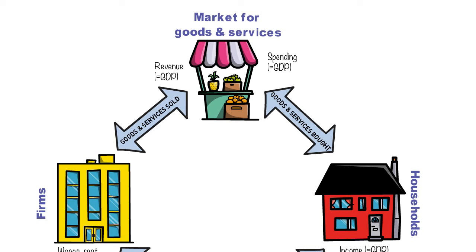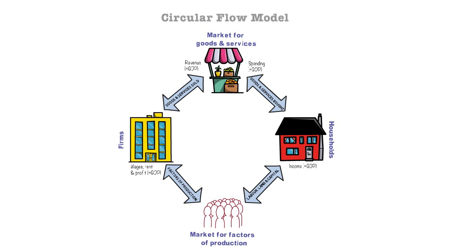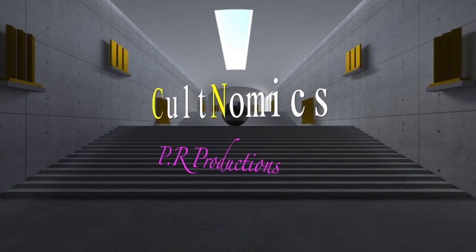From this market for goods and services, we can also see that households are going to spend. Goods and services are bought and sold, and all this spending added together gives you GDP as well. So the circular flow is a way of measuring the size of an economy from different perspectives — be that revenue, spending, or income levels. I hope you come back to Cultnomics soon. Bye for now.